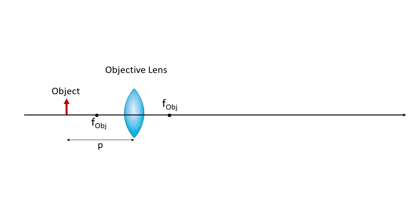The small object under scrutiny is placed just beyond the focal point of the objective lens. We label the object distance P and the focal length F. The focal length of the objective in a microscope is normally quite short, less than one centimeter.